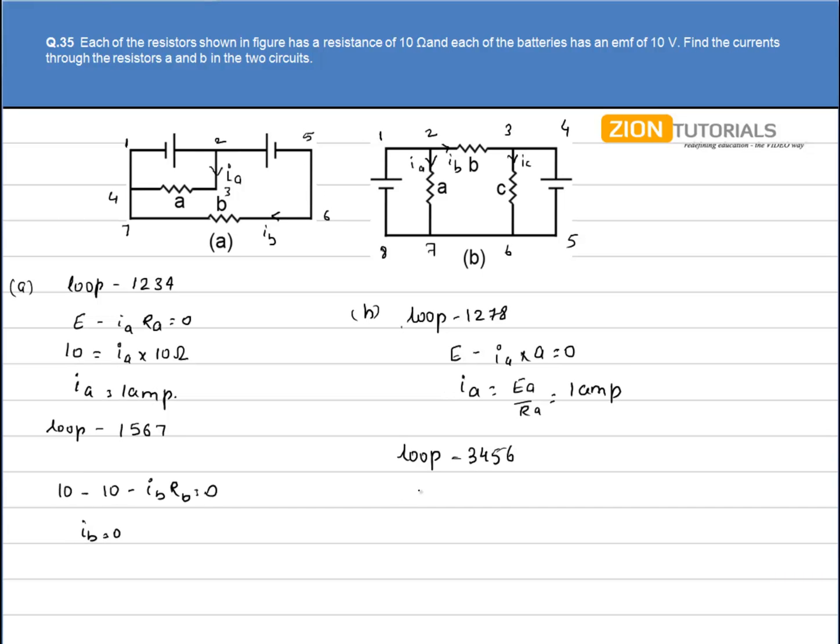By Kirchhoff's law, I get emf is equal to IC into RC. So IC comes out to be 1 ampere from here.